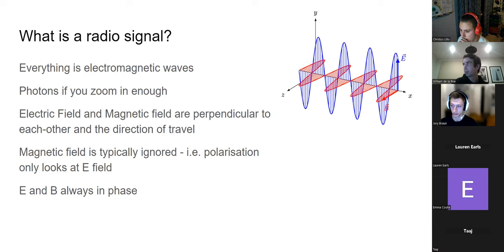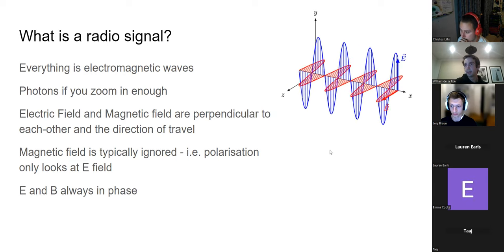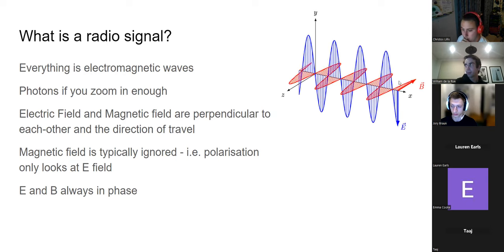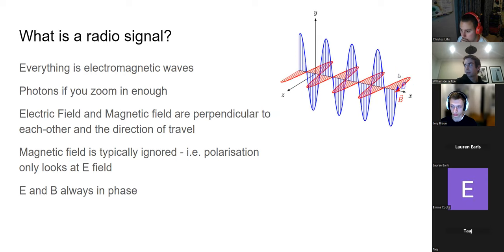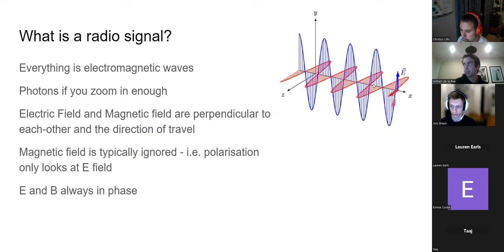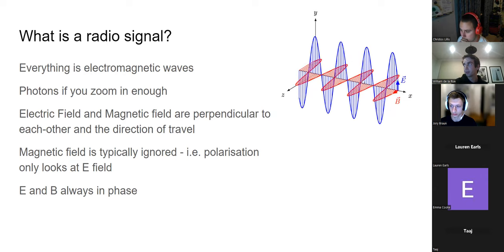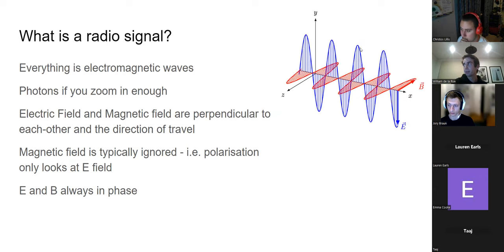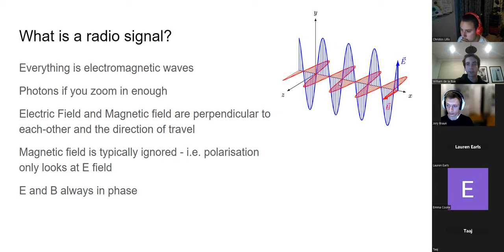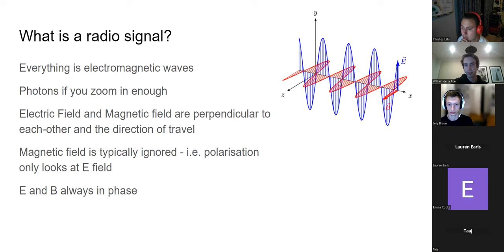The electric and magnetic waves are in phase — you can see they cross zero at the same point and have their peaks at the same distance from the start at the same time. The electric field and magnetic field are also perpendicular to each other and perpendicular to the direction of travel.